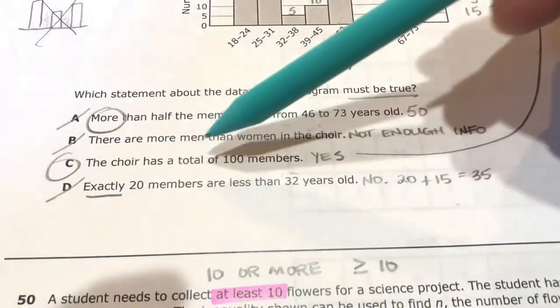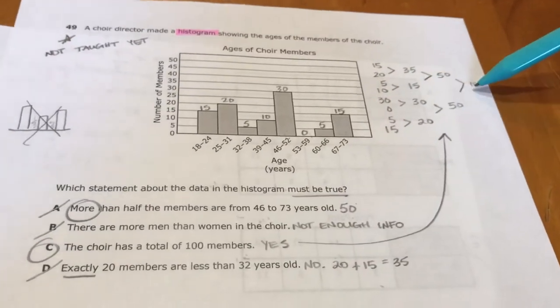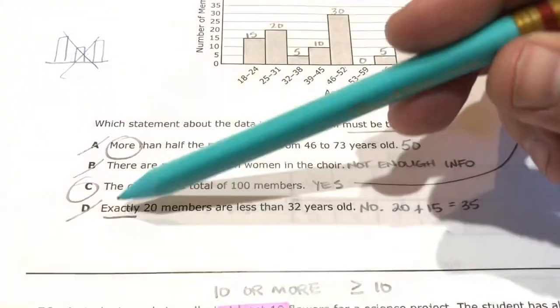Exactly 20 members are less than 32 years old. No. Here's 32, is this bar right here. So 31 and below, that's 20 people and 15 people, that's a total of 35 people. So exactly 20 are less than 32 years old? No, exactly 35 are less than 32 years old.